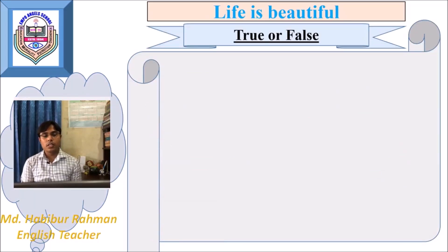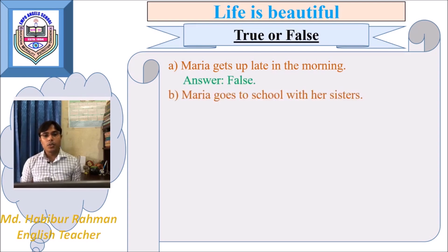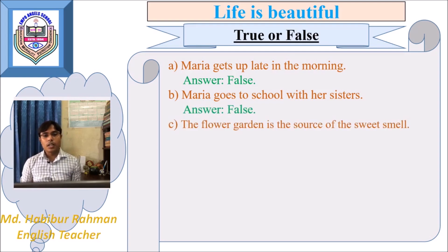Let's practice some true/false questions. There will be some statements based on the passage that we have read. If the statement is true, write true in your answer script, and write false if the statement is false. Our first statement is: Maria gets up late in the morning. No — Maria gets up early in the morning, so this statement is false. Our next statement is: Maria goes to school with her sisters. No, so this statement is also false. Our third statement is: the flower garden is the source of the sweet smell. We know flowers are in the flower garden, so the flower garden is the source of sweet smell — the answer is true.